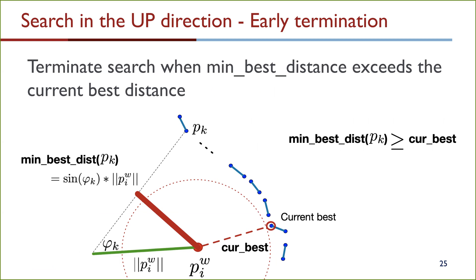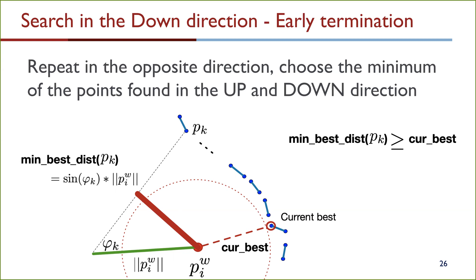Intuitively, this makes sense: if we were to draw a circle centered at p_i^w with a radius equal to the current best distance, the fact that the lower bound min-best distance exceeds the current best means that locally no other scan point will exist which is closer than the current best scan point. Once the search in the up direction is complete, you repeat in the opposite direction and then choose the minimum of the points found in the up or down direction.